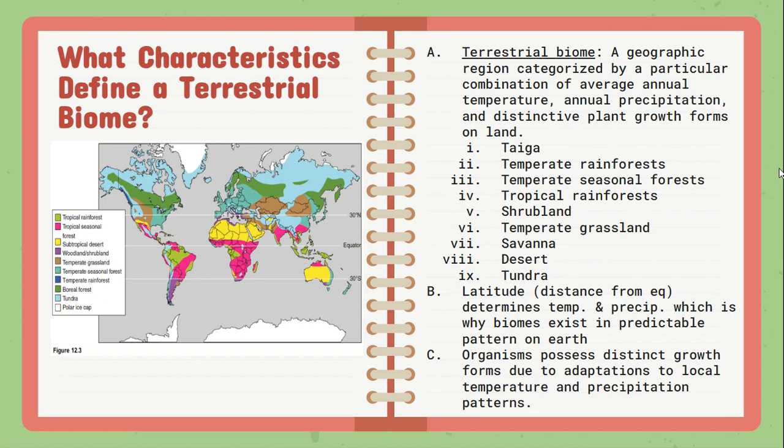Those biomes would be: taiga or boreal forest; temperate rainforest or temperate seasonal forest, which can also be called the temperate deciduous; tropical rainforest; shrublands; temperate grasslands; savanna; desert; and tundra. You need to know all of these as well as the characteristics of each.